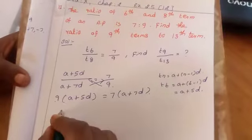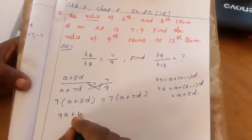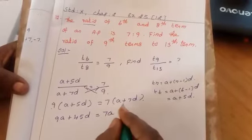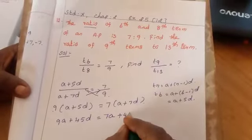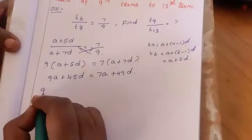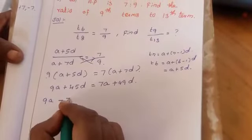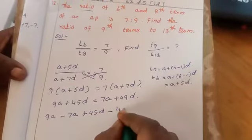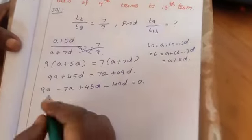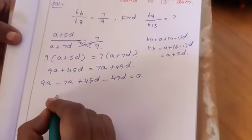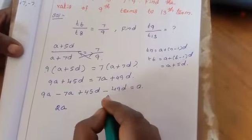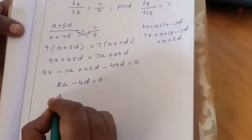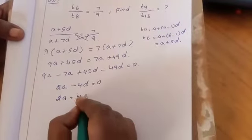9A plus 45D equal to 7A plus 49D. Arrange in one side: 9A minus 7A plus 45D minus 49D equal to 0. Now 9A minus 7A is 2A, 45 minus 49 is minus 4D equal to 0. So 2A equal to 4D.